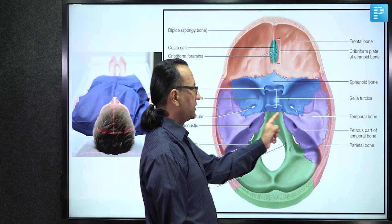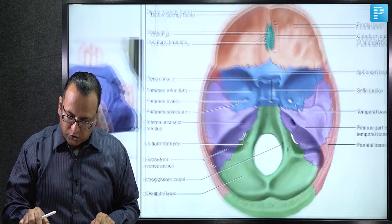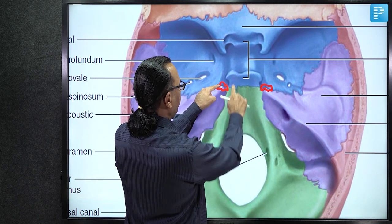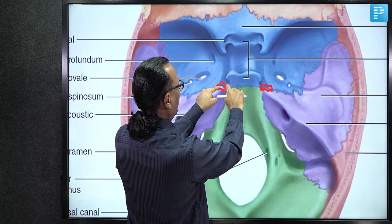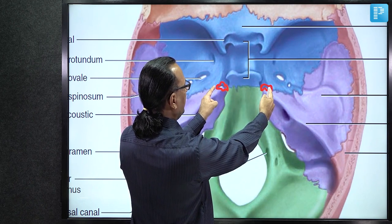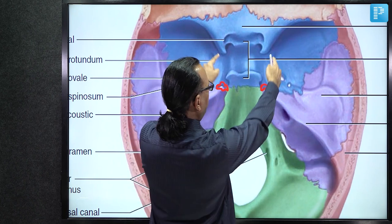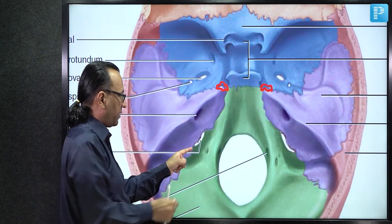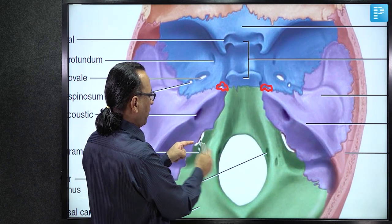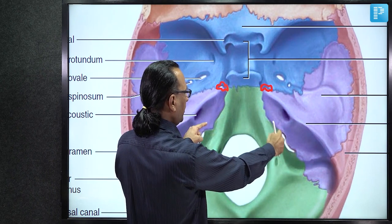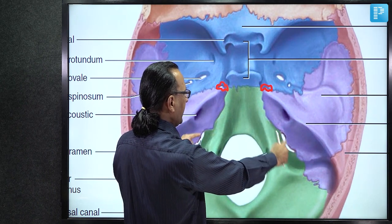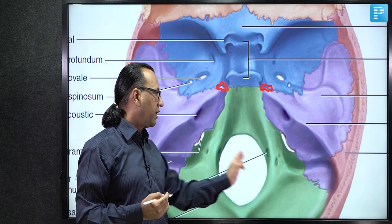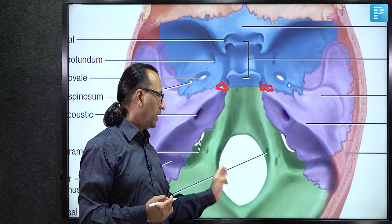Magnifying the region: foramen lacerum is bounded by the apex of the petrous temporal bone, the basilar part of the occipital bone, and the root of pterygoid process of the sphenoid bone. Foramen rotundum is in the greater wing of sphenoid (with ovale and spinosum). Jugular foramen is between two bones — medially occipital, laterally temporal — transmitting jugular vein and cranial nerves 9, 10, 11. Foramen magnum in the occipital bone transmits the lower medulla oblongata, two vertebral arteries, and the spinal accessory nerve in the subarachnoid space.